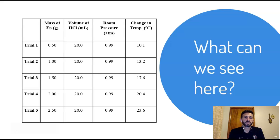Volume of HCl in milliliters is probably a liquid. That's hydrochloric acid, by the way. Room pressure in ATM, whatever that is, and then the change in temperature in Celsius. Now if I look at the data really quick, I see that the mass of zinc is changing, the volume of the hydrochloric acid is not, the atmospheric pressure in the room is staying the same, and then the change in temperature is changing. So let's just keep that in mind for now.